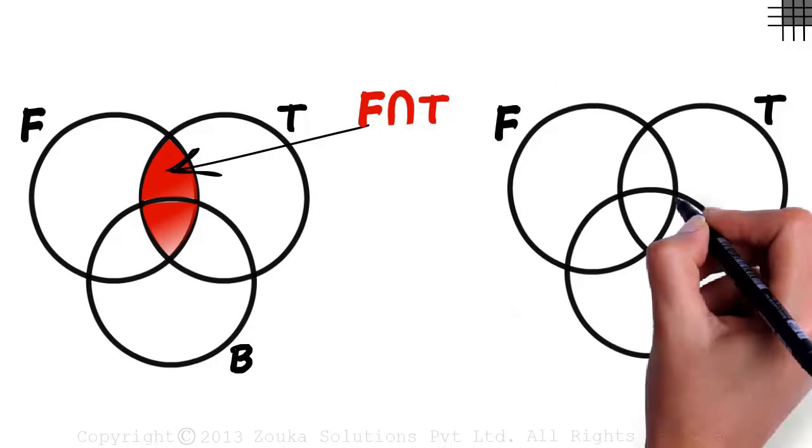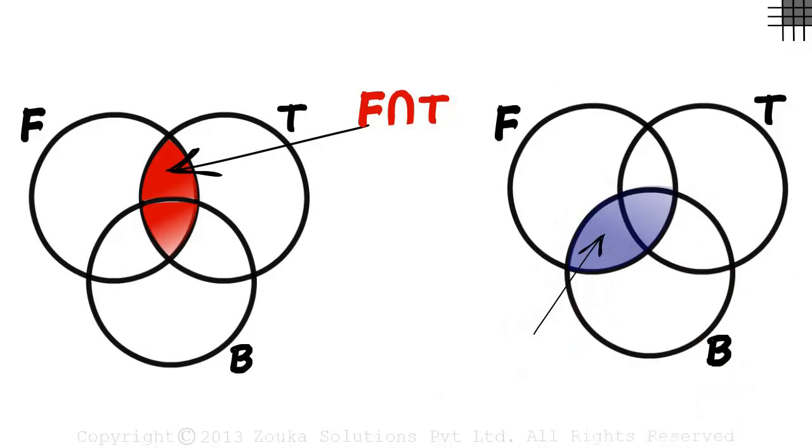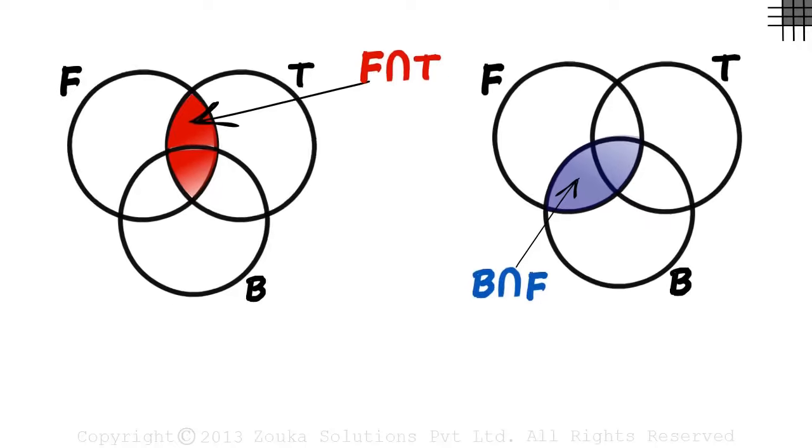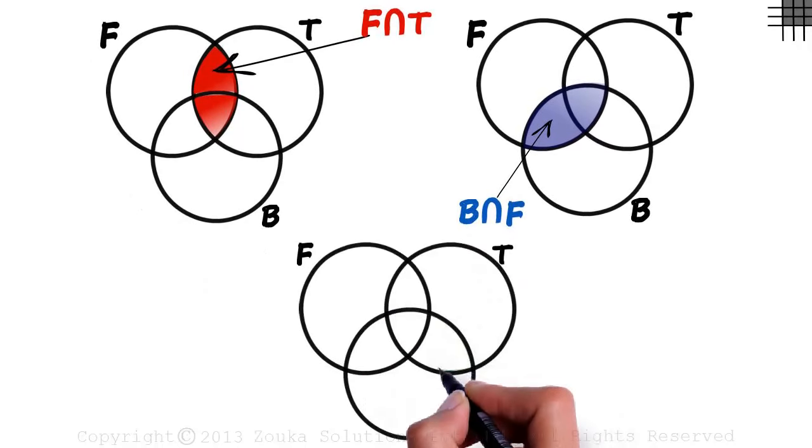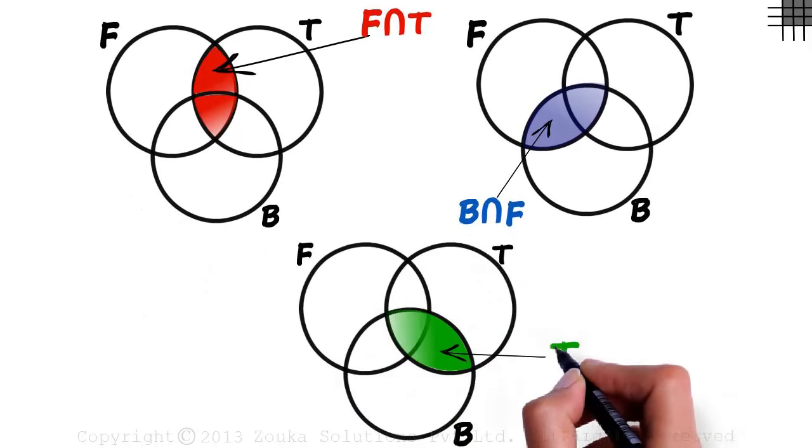And what about this dark blue region? It is B intersection F. And this green region is T intersection B.